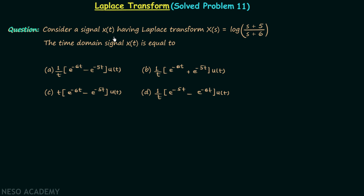Consider a signal X(t) having the Laplace transform X(s) equal to log of (s+5) divided by (s+6). The time domain signal X(t) is equal to? There are four options and we need to choose the correct option. So let's see how we can solve this question.